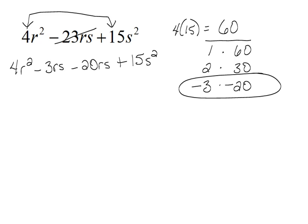Now we have four terms, and for four terms we factor by grouping. We're going to split this down the center and look at the first two terms. In the first two terms we have a common r that we can factor out. When we factor out the r we're left with 4r - 3s.